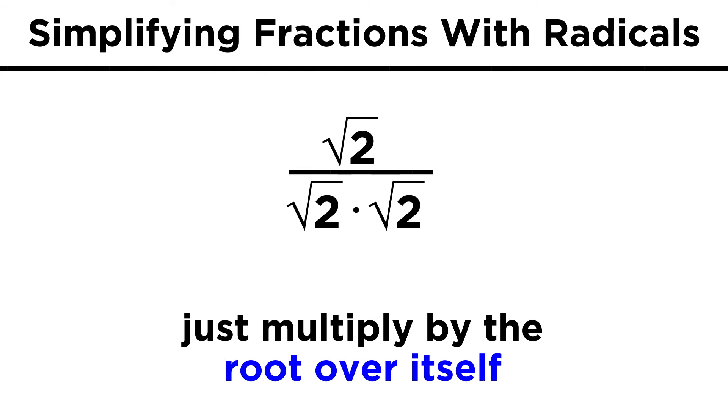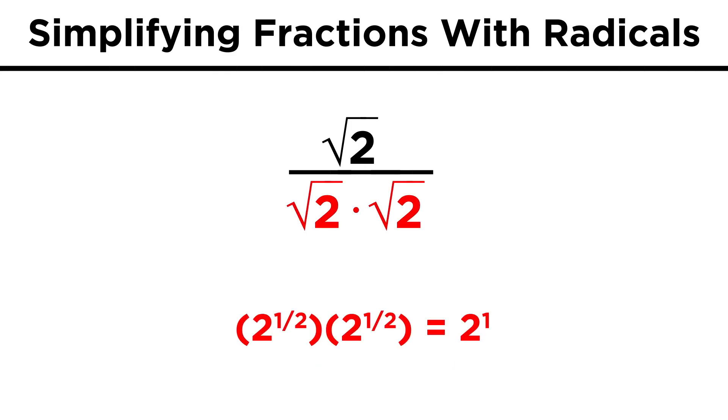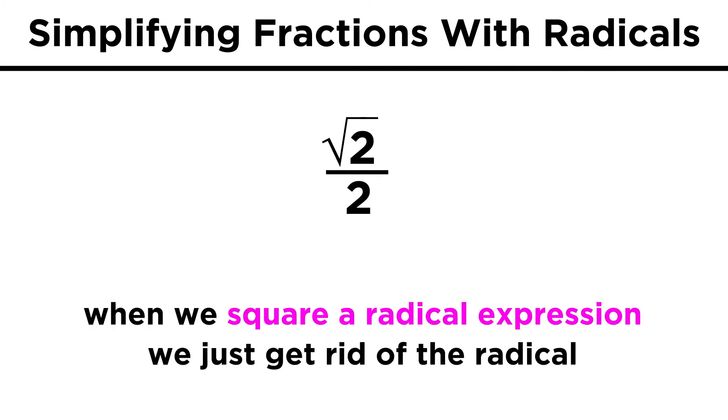That gives us root two in the numerator, and for the denominator, root two times root two is the same thing as two to the one half times two to the one half, and one half plus one half is one, so two to the one, or simply two. So a radical expression times itself just gets rid of the radical, leaving us with root two over two.